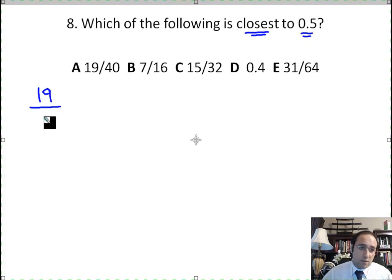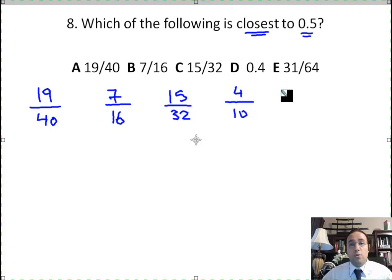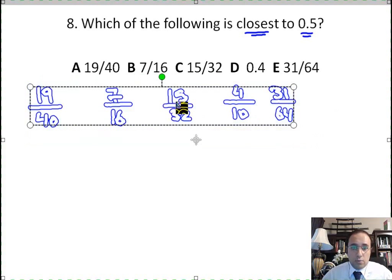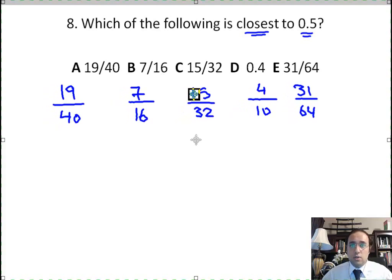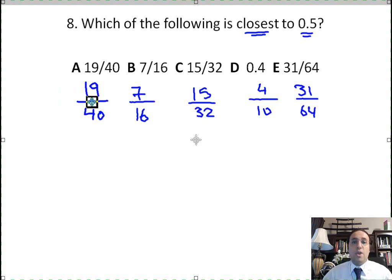First, these are the numbers I have. 19 over 40, that's A. Then I have 7 over 16, B. 15 over 32, C. 0.4, I need to change that into a fraction as well so that they all look the same. Probably I will find the trick now. So let's try and put it into 4 over 10. 31 over 64 is E. Okay. Now let me take all this and just shift it a little bit to the right so that they are under their corresponding letter, which is right here.